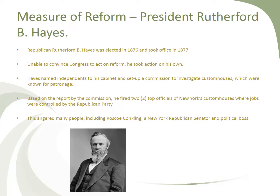Let's talk about President Rutherford B. Hayes. Republican Rutherford B. Hayes was elected in 1876 and took office in 1877. He was unable to convince Congress to act on reform in terms of political corruption, so he took action on his own. He named independents to his cabinet and set up a commission to investigate custom houses, which were known for their patronage. Based on the commission's report, he fired two top officials of New York's custom houses where jobs were controlled by the Republican Party — so here he is, a Republican president firing people involved with the Republican Party — which didn't go over well, especially with New York Republican senator and political boss Roscoe Conkling.